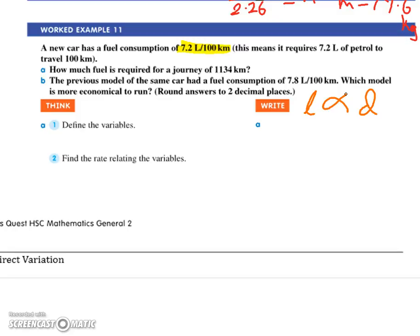What have they given us? What have they given us in the question? You all said numbers. Honestly, you should be able to look at that and go, wow, 7.2 liters per 100 kilometers, that's a rate. They've given us the constant variation.